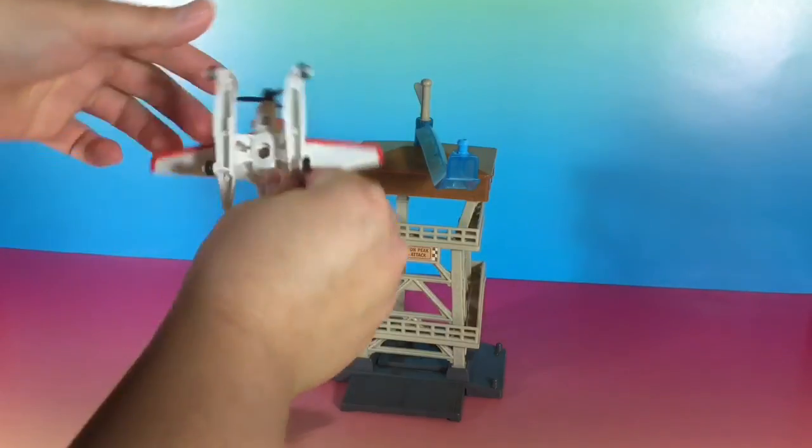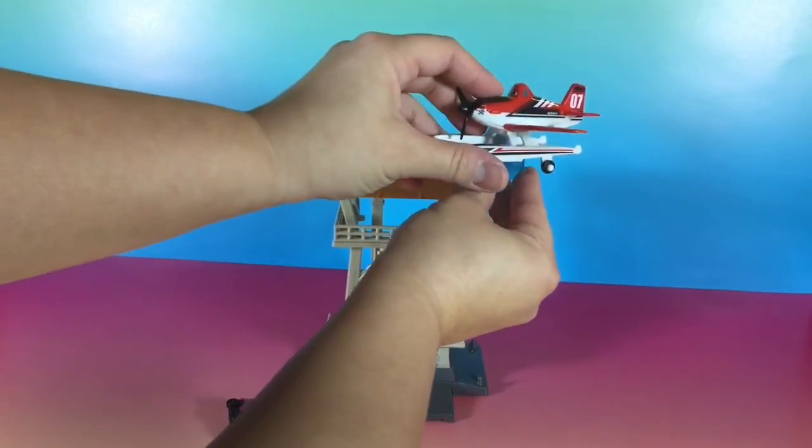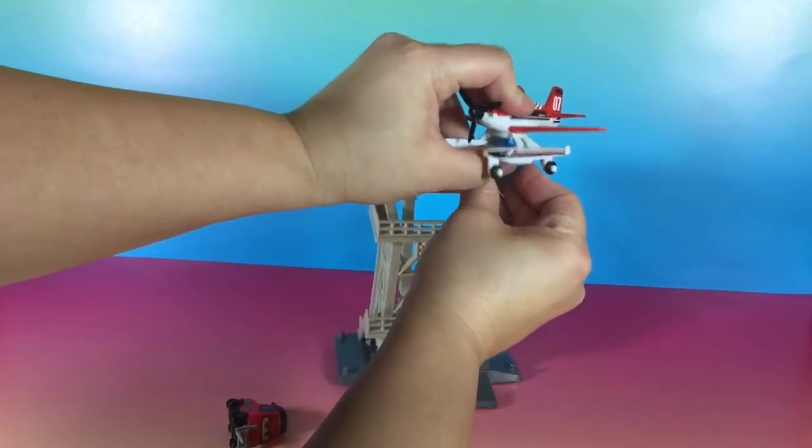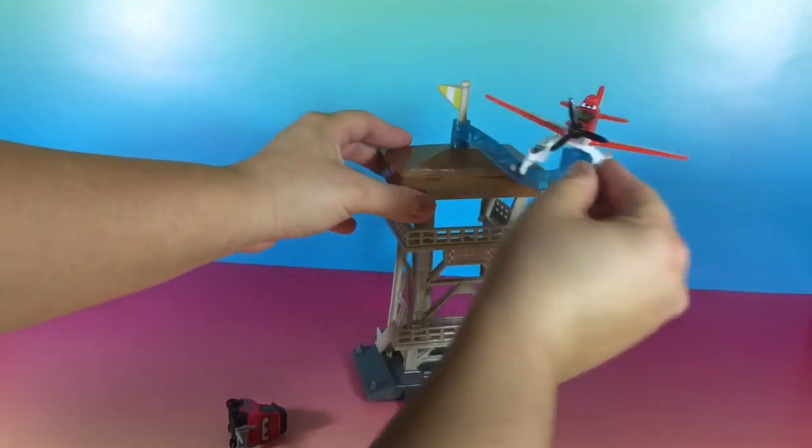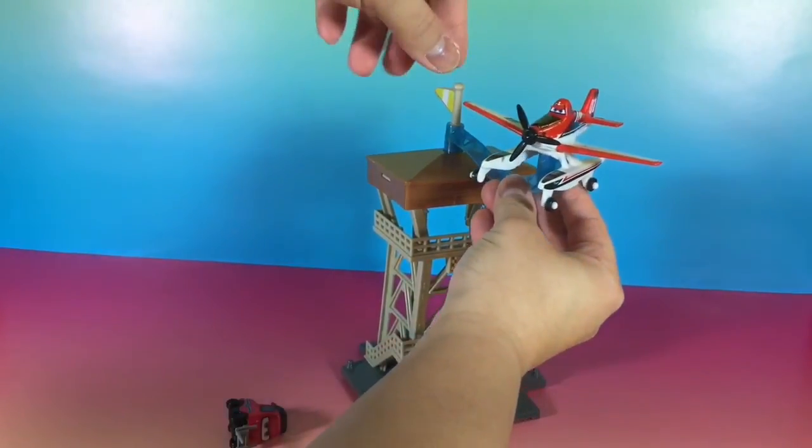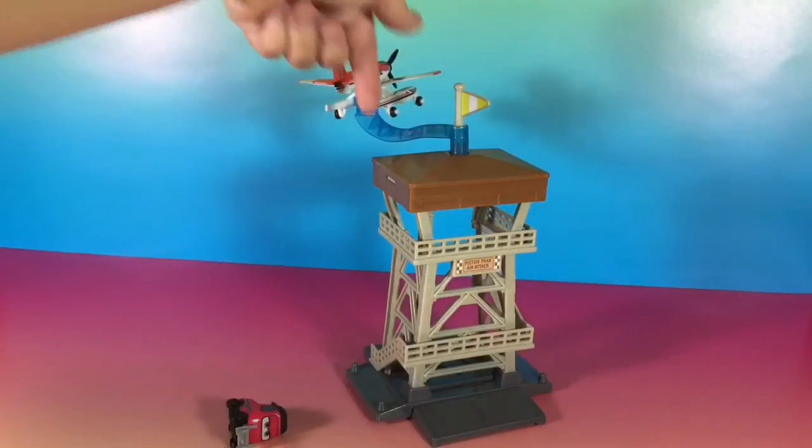Let's put Dusty on this swivel thing on top of the tower here. There's the platform right there. I think you just gotta snap it in on there. There you go. It doesn't feel stable, but I guess that's the way he's supposed to sit. Alright, so there you go.